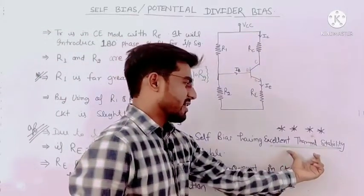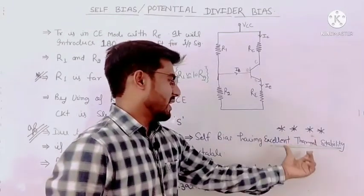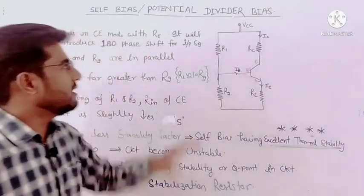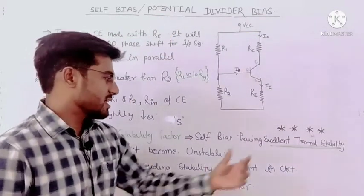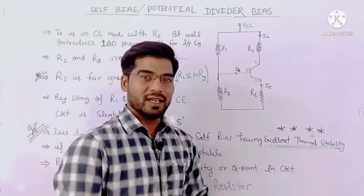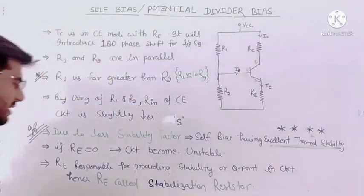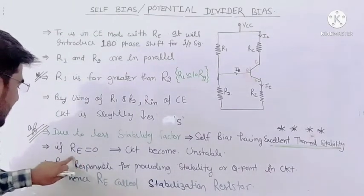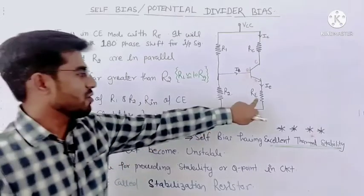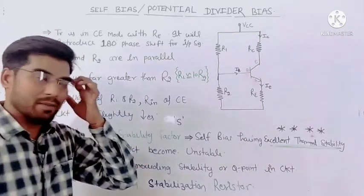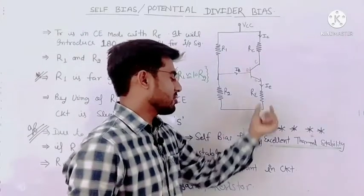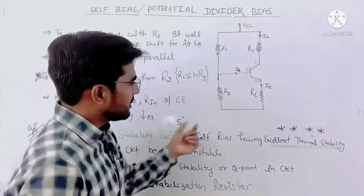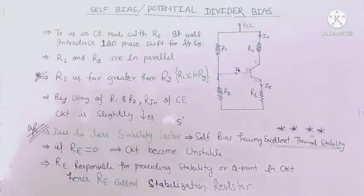Among fixed biasing, emitter biasing, and collector-to-base biasing, voltage divider biasing has the highest thermal stability. That is why it is most frequently used. Next point: if RE is equal to zero, meaning no resistance at the emitter terminal, the circuit becomes unstable. The stability factor becomes 1 plus beta, making the circuit unstable.